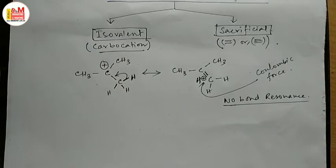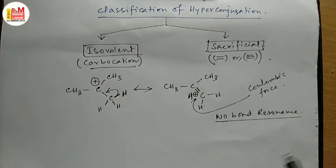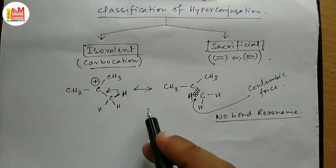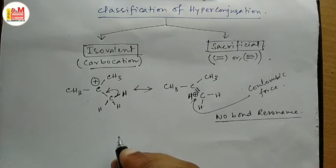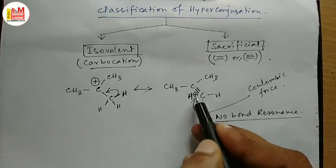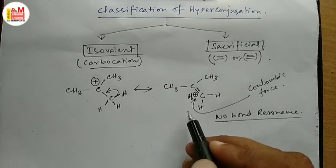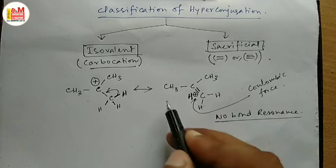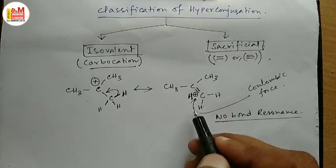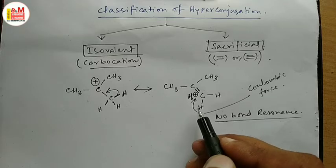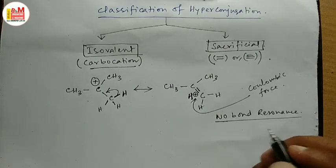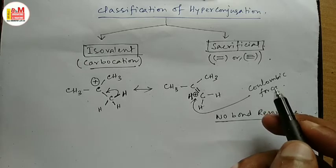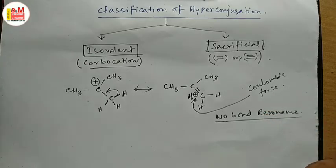Those who have seen my video regarding resonance will definitely understand the case is very similar to resonance — the only difference is the involvement of the sigma electron in place of the pi electron. In resonance, this type of H+ release does not take place. But here, this H+ release is taking place — however, this H+ is not actually free to move. It is attached to the electron density cloud of the system with the help of Coulombic force of attraction. As there is no bond between the H+ and the electron cloud, that's why it is called no bond resonance, because it is almost equivalent to resonance.